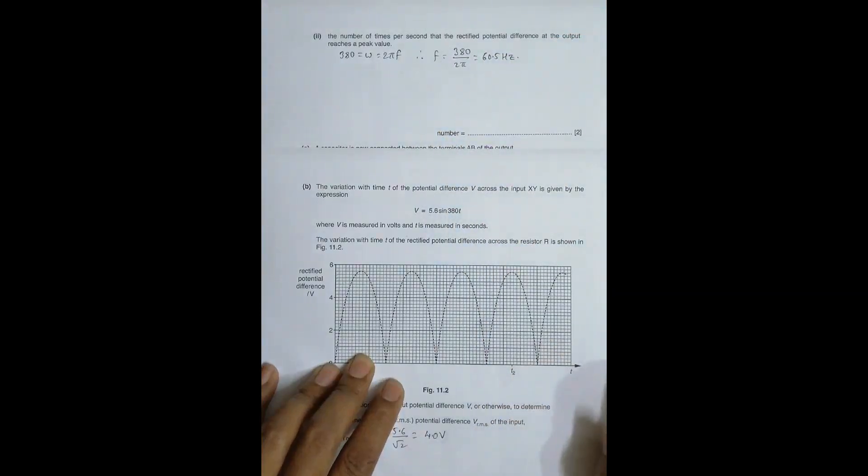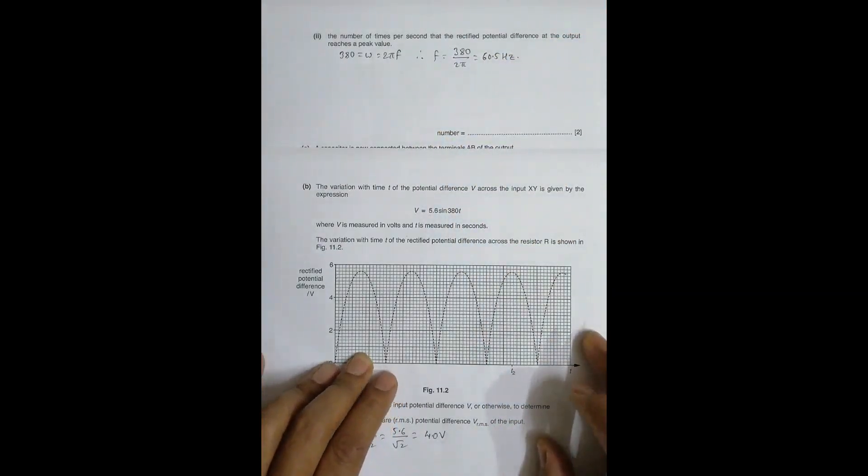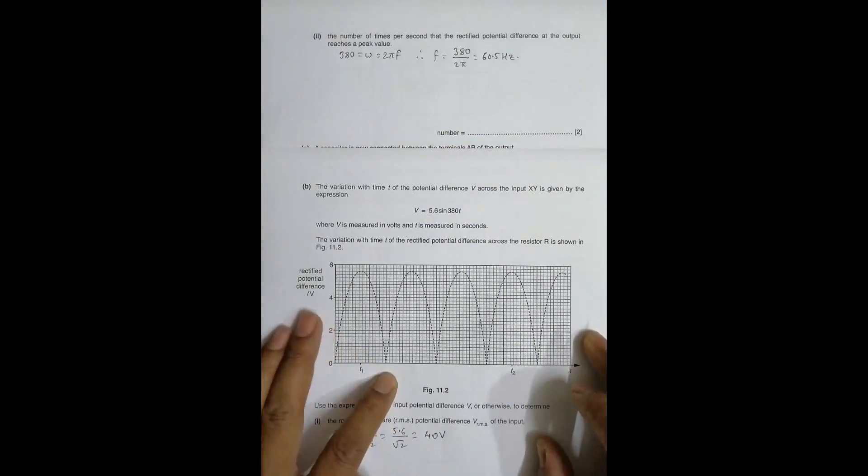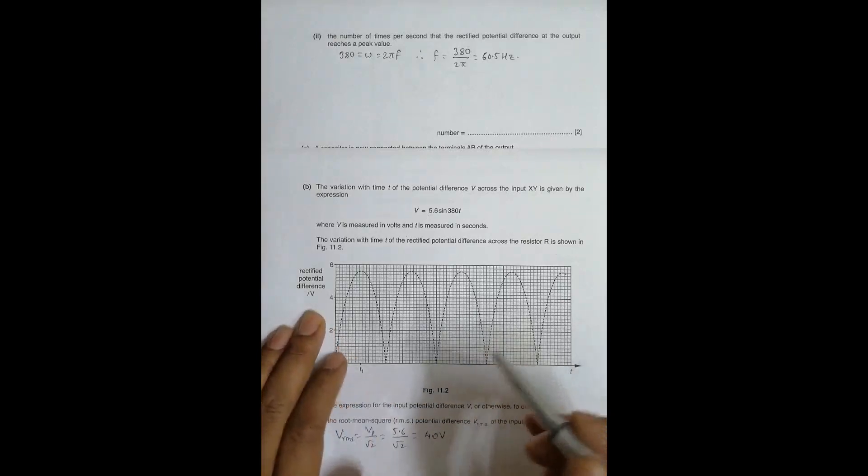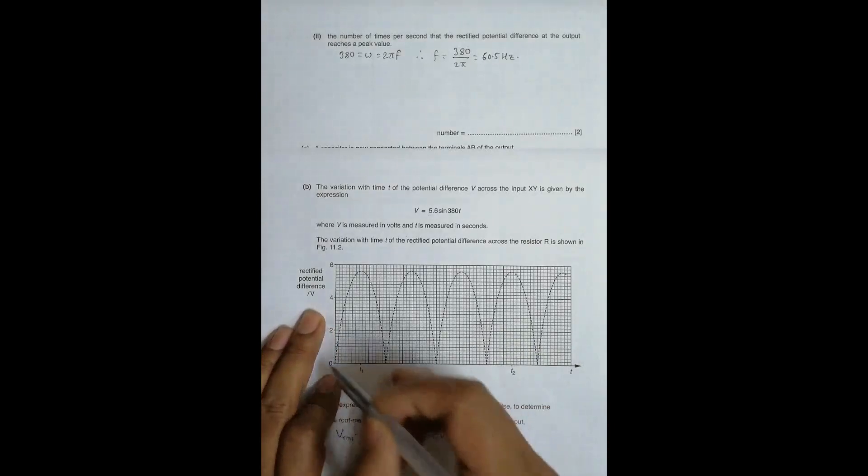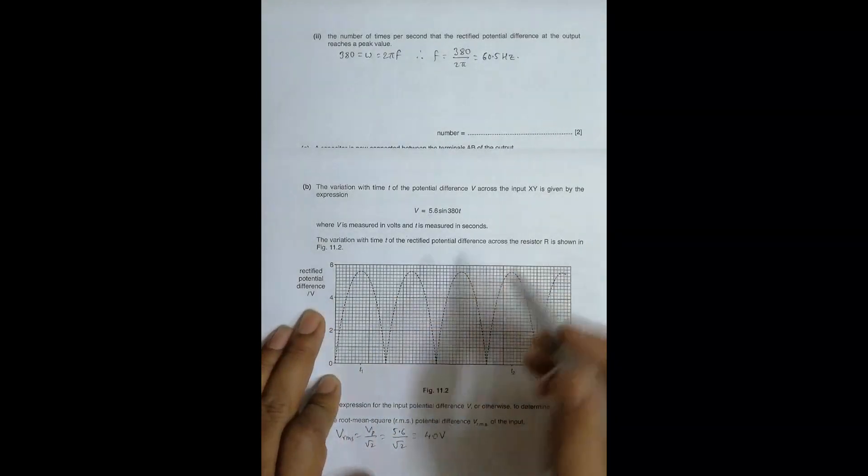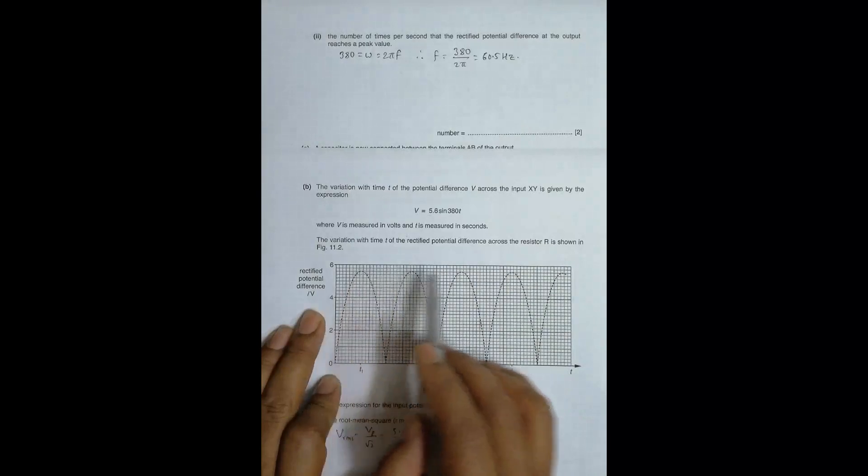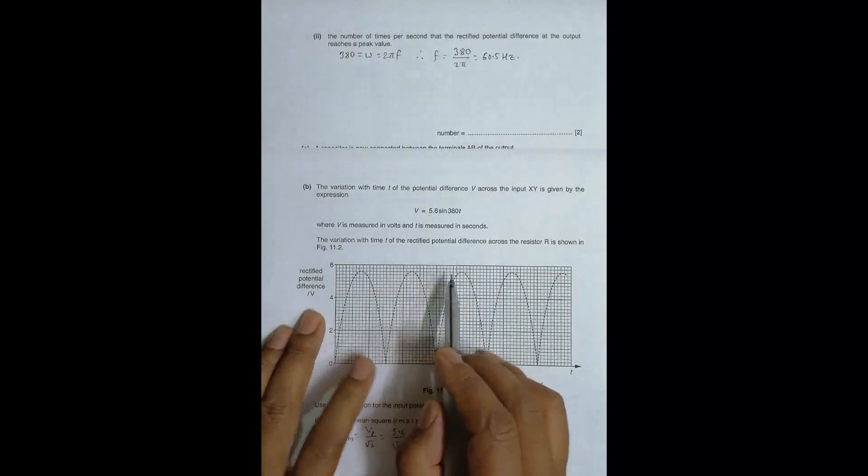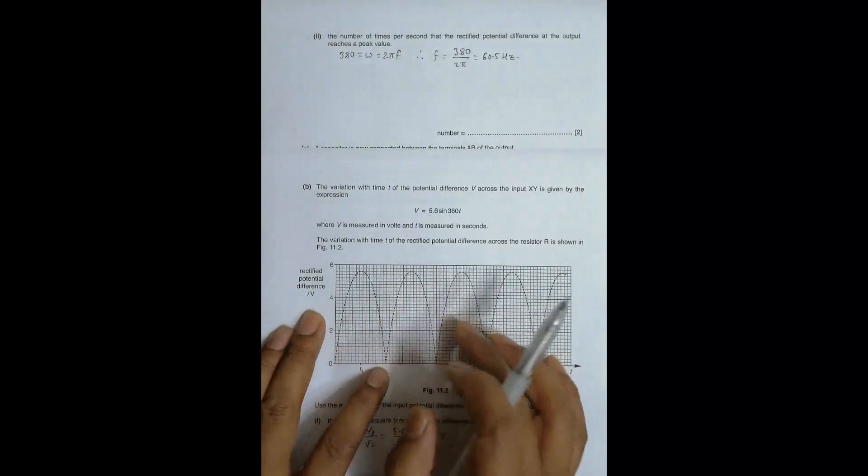60.5 hertz. So the frequency of AC being provided to the rectifier is 60.5 hertz, that is 60.5 times per second. So it means that the input AC is somewhat like this. It comes here, it comes here and it goes like this. So the time period is from here to here for the main supply, but here time period is like this. So the time period is half. Half means the frequency in this case is doubled.